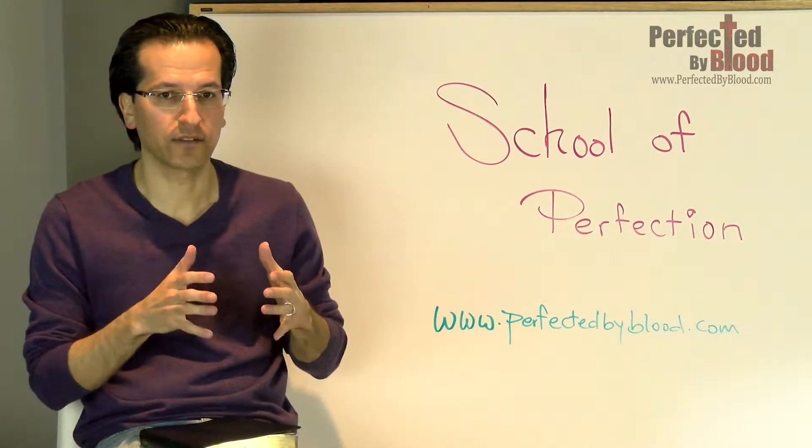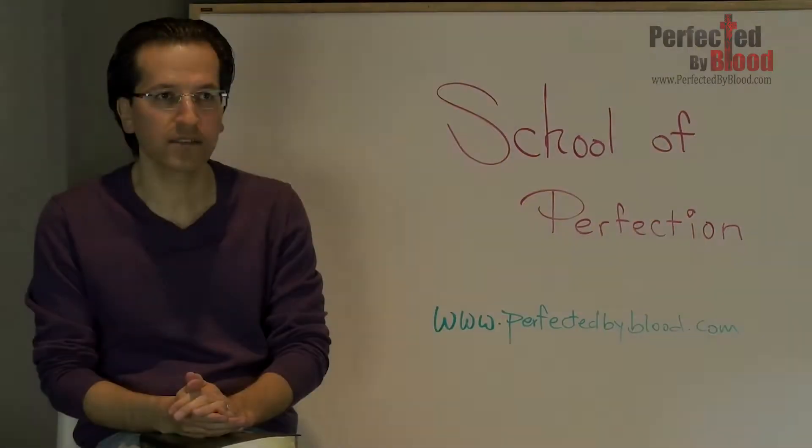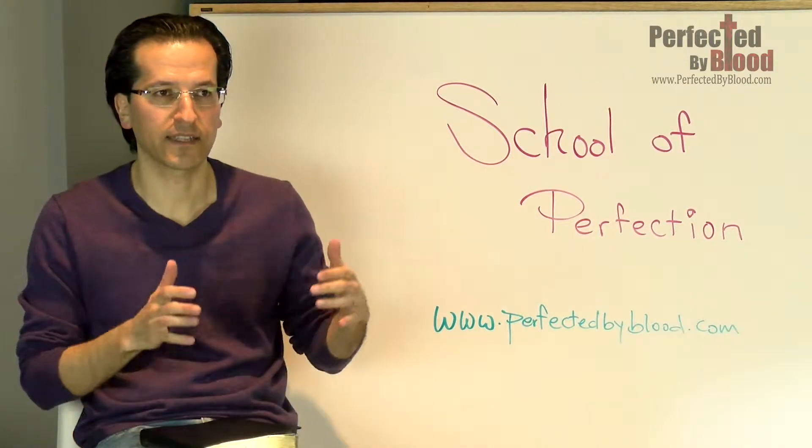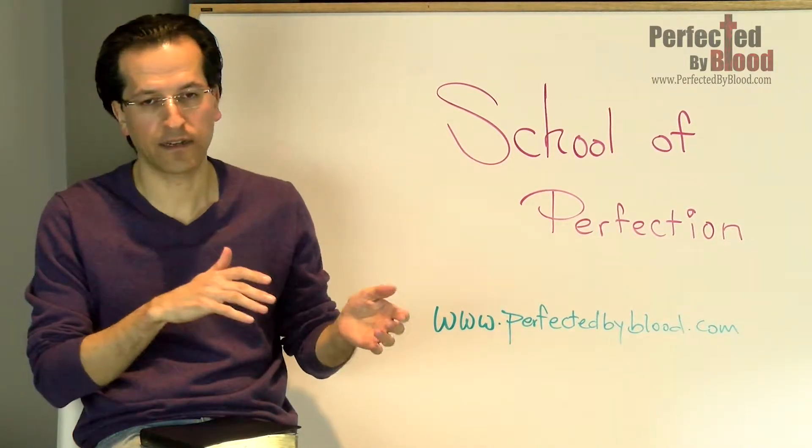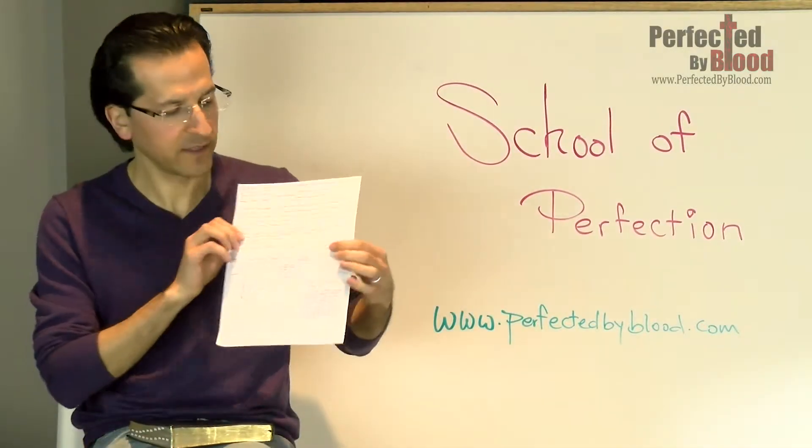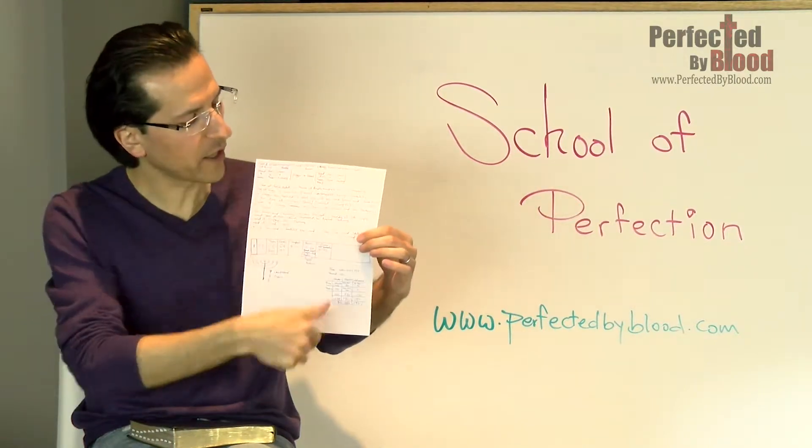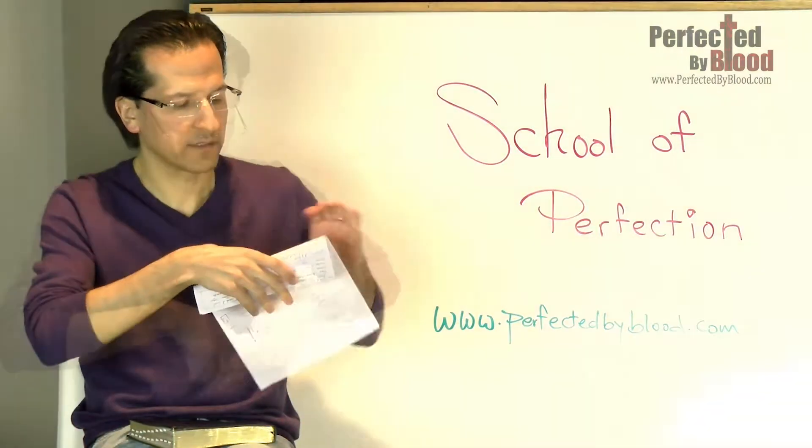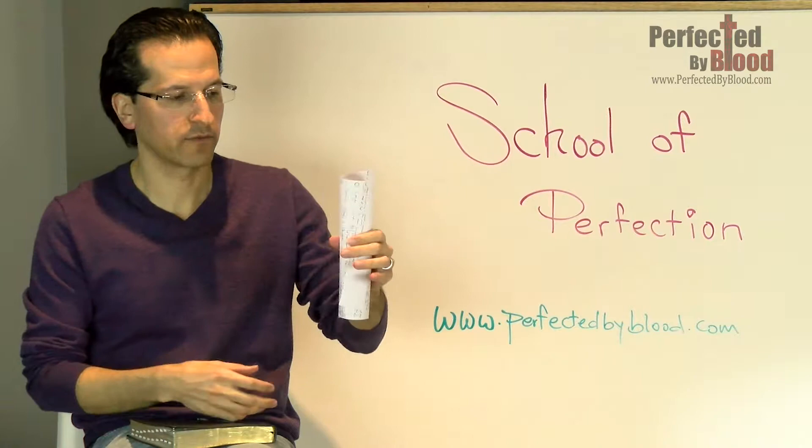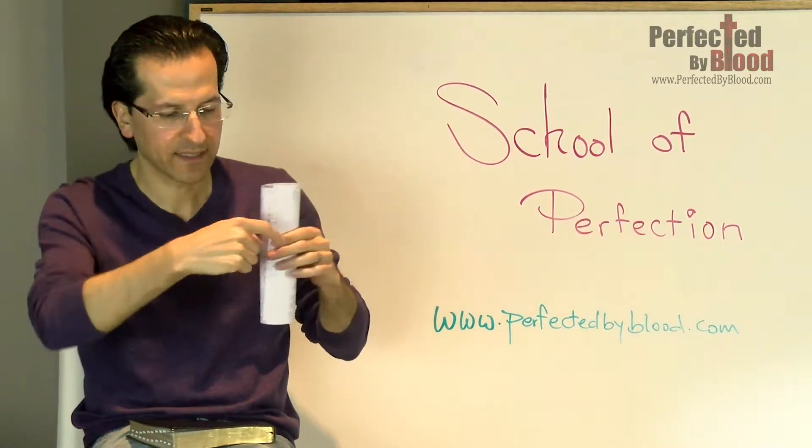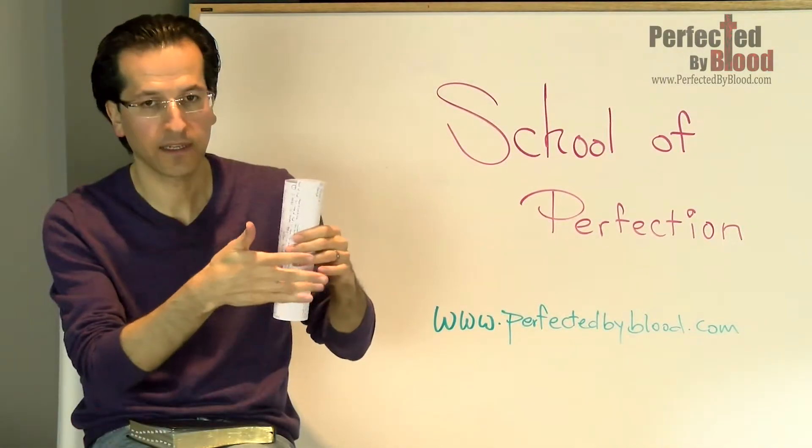A scroll is sitting on the throne on the right hand. This scroll, we read, is written inside and on the back. They would write on it, then roll it, and this would become the scroll. It has seven seals. There was something written outside, but there was something inside.